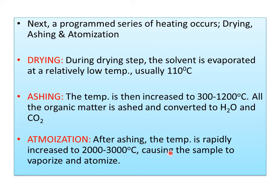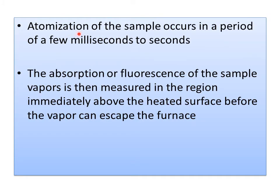The third step is atomization. After ashing, the temperature is rapidly increased to 2,000 to 3,000 degrees centigrade. At this high temperature the sample vaporizes and gets atomized. Atomization occurs within a period of a few milliseconds to seconds. The absorption or fluorescence of the sample vapors is then measured in the region immediately above the heated surface before the vapors escape the furnace.